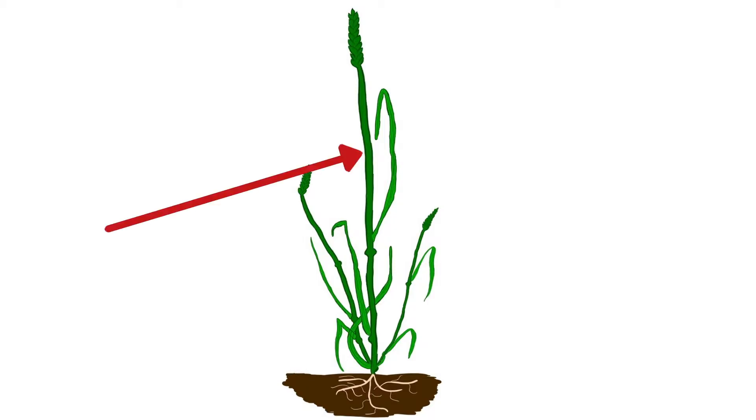In wheats that are too tall, the stem of the wheat can break because the roots securely anchor it in place, but gravity pulls down on the top of the plant.